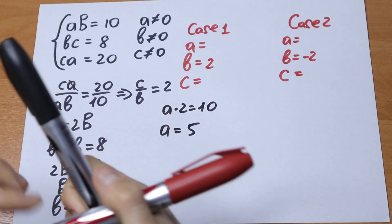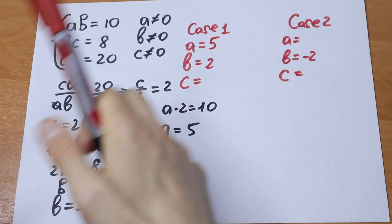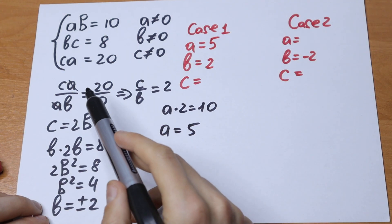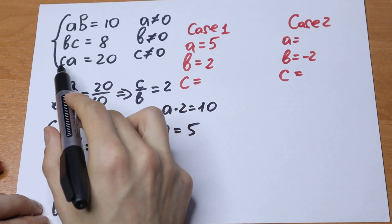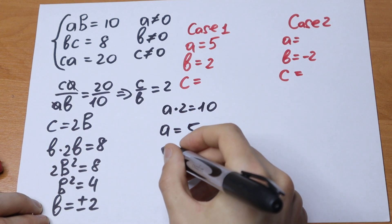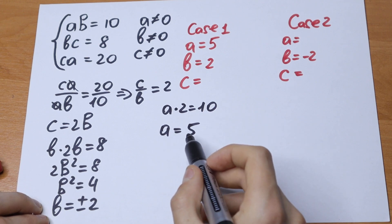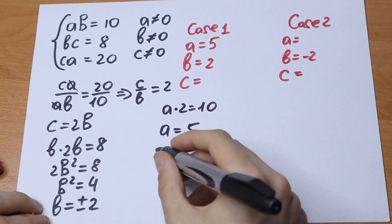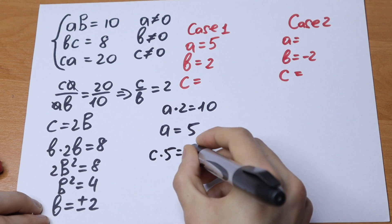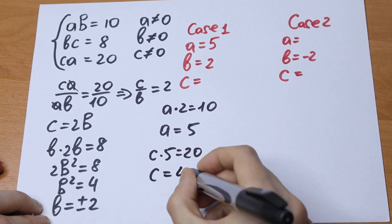So we can write 5 right here. We have A and B, and now we can calculate C. Using the third equation, C times A equals 20. We know A equals 5, so C times 5 equals 20, and C equals 4.